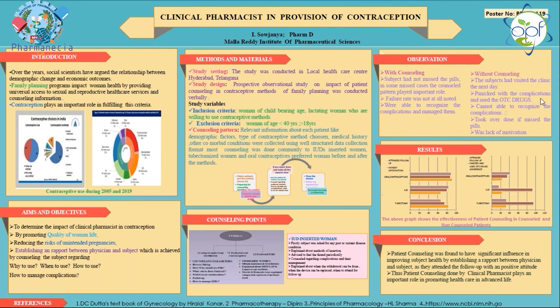Good evening ladies and gentlemen. I am Saujanya, here to make a short presentation on clinical pharmacist in provision of contraception. The relationship between demographic change and economic outcomes is inversely proportional — as the demographic population increases, the economic benefit per person decreases. Family planning plays an important role as a social service helping individuals determine the number and spacing of their children, and contraceptive methods fulfill this criteria.